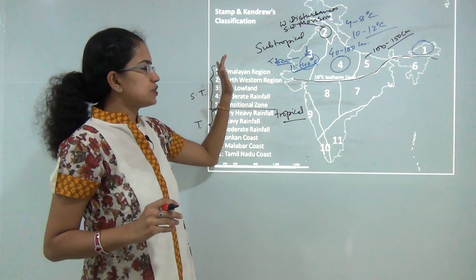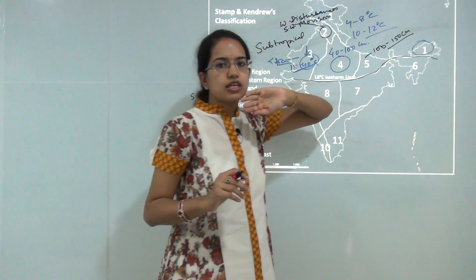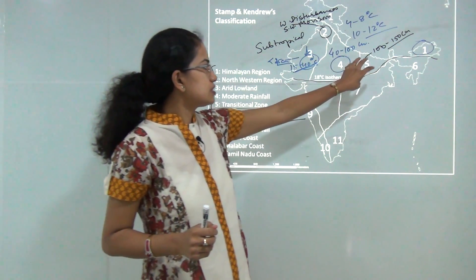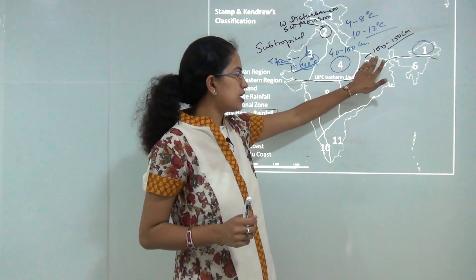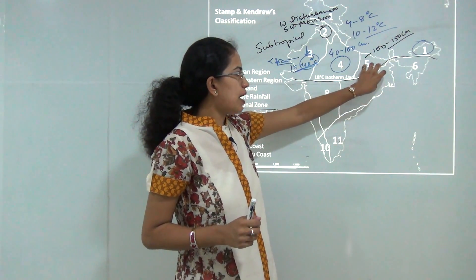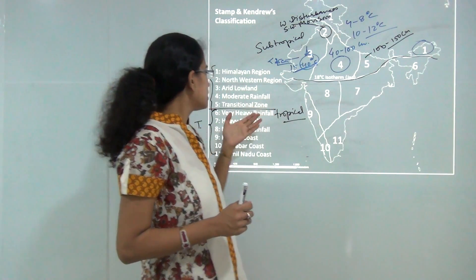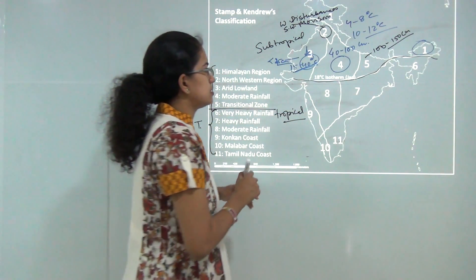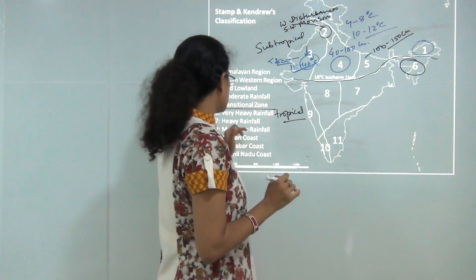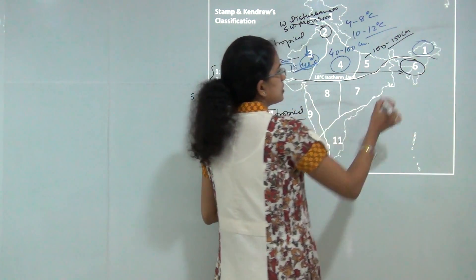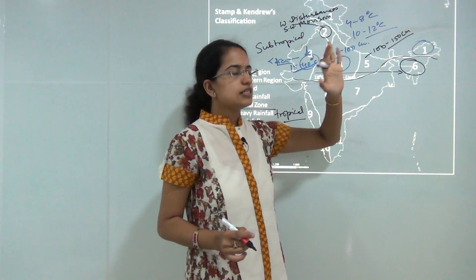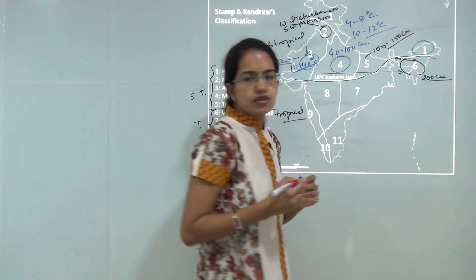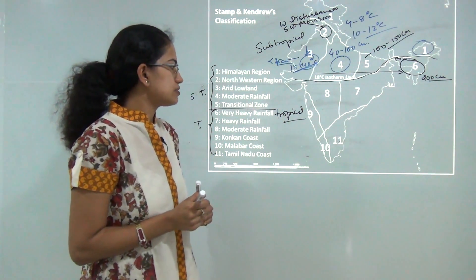Stamp and Kendrew's classification from west to east mainly focuses on the amount of rainfall, clearly showing that rainfall increases towards the east. The transitional zone covers eastern Uttar Pradesh, northern Bihar, and parts of Jharkhand. These are the major subtropical regions. Moving to the tropical region: Region 6 is the region of very heavy rainfall — above 200 centimeters — including the high-rainfall areas of Cherrapunji and Mawsynram in Assam, mainly caused by the southwest monsoon.